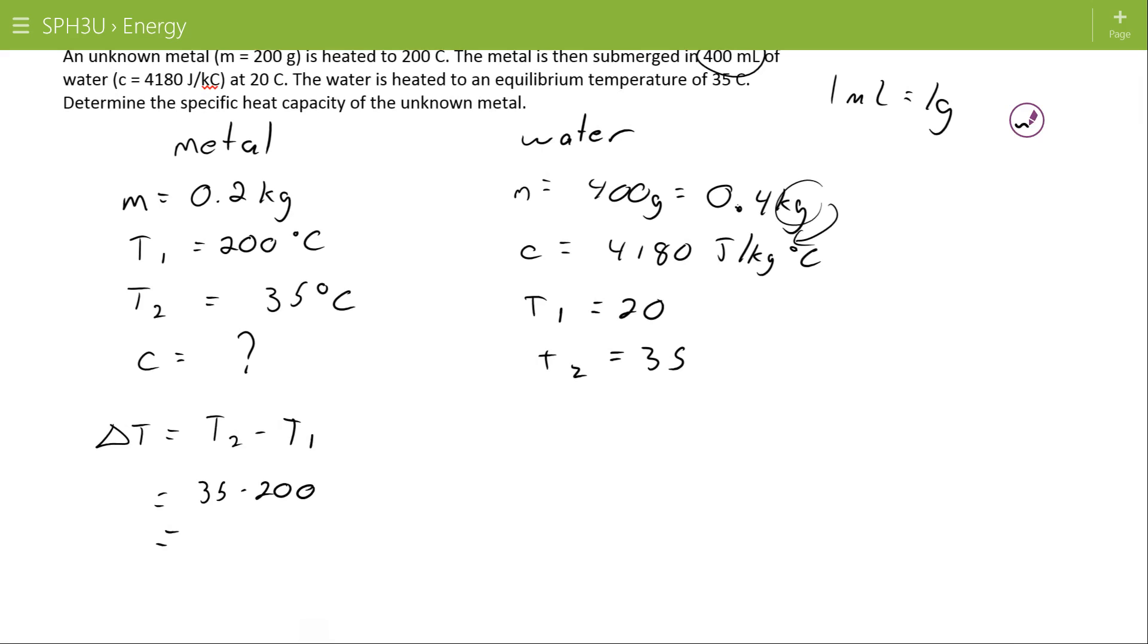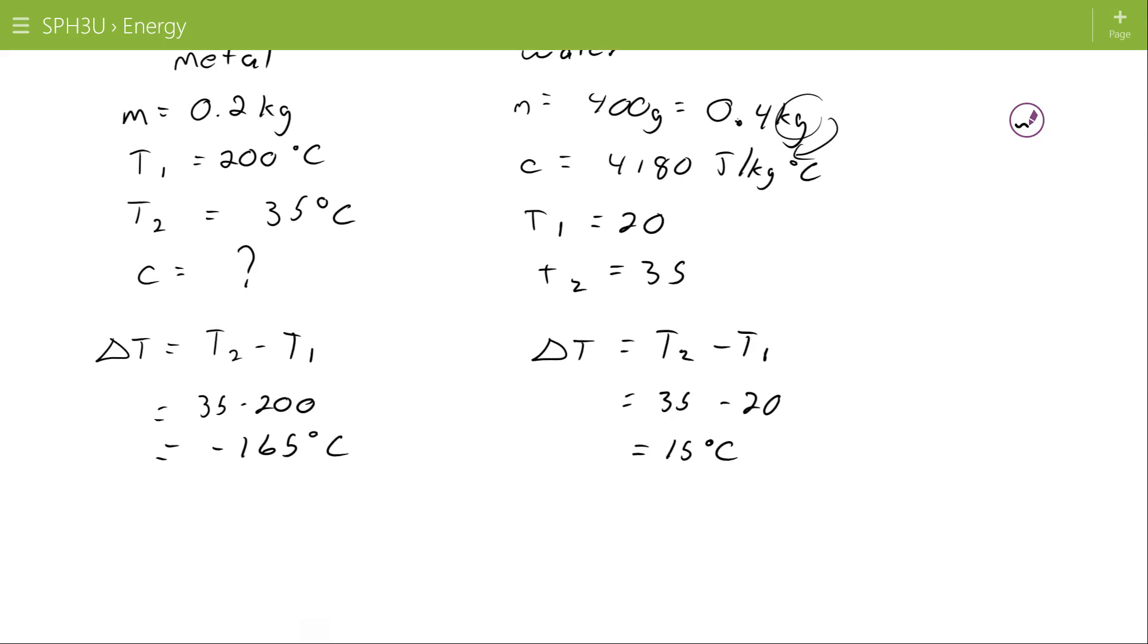So that's going to be negative 165 degrees C for the metal. Alternatively, delta T on the water side, T2 minus T1, is 35 minus 20, which is 15 degrees C.